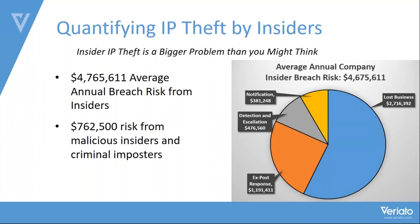Companies have an annual breach risk from insiders that can be quantified at $4.765 million. At least 16%, or about $762,000, comes from malicious insiders and criminal imposters — that small 2% and 14%. The remaining amount comes from detection, escalation, lost business, and ex-post responses. A lot of money goes into fixing that problem after it's been broken.